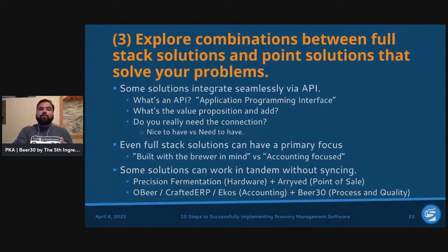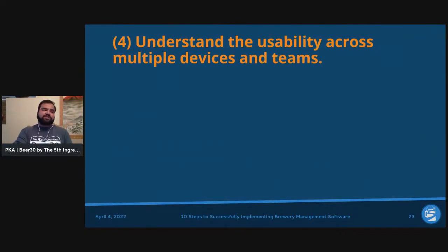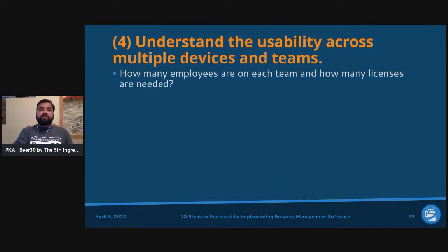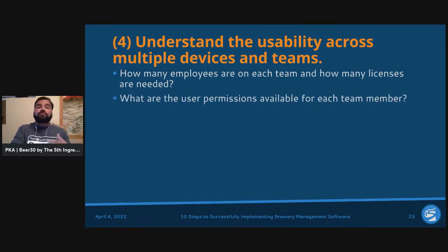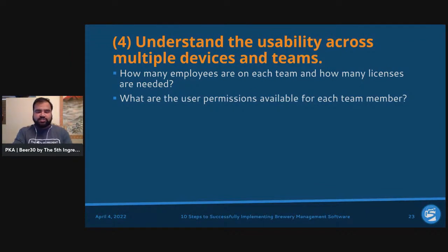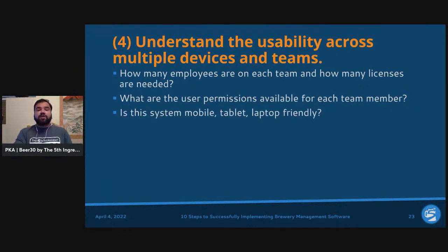Step number four: understand usability across multiple devices and teams. Key questions include: how many employees are on each team and how many licenses are needed — is it per user, per team, or unlimited? What are the user permissions available for each team member? For example, brewers may not need to see financial details, and accountants may not need access to recipes.